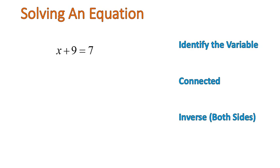First off, I want to identify my variable. When you're asked to solve an equation, that's what they're asking. What is the value of your variable, your unknown? And in this case, our unknown value is x, right? That's our variable. What's connected to that x, and in this case it's plus 9.